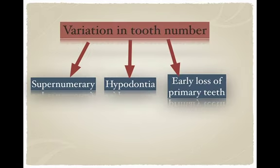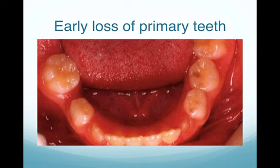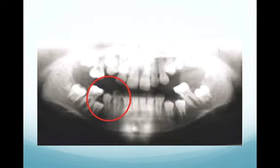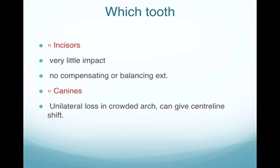Now we discuss early loss of primary teeth. On the right side of the image, the molar has migrated forward due to premature loss of primary E, while on the left side, because the E and D are present, there is no mesial migration. This mesial migration will cause severe crowding because when the premolar 5 erupts there is no space. The effect of premature loss depends on three factors: which tooth is lost, when it is lost, and the amount of crowding.